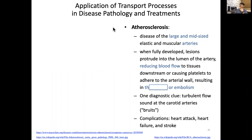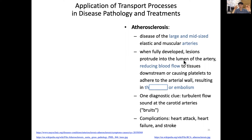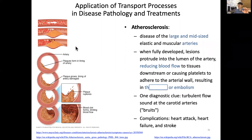First, an example: atherosclerosis, which is a disease of middle or large size elastic and muscular arteries. When fully developed, the lesions will protrude into the lumen of the artery. This will reduce blood flow because of increased resistance. As we understand, resistance is related to one over the radius to the fourth — that's the Poiseuille relationship.